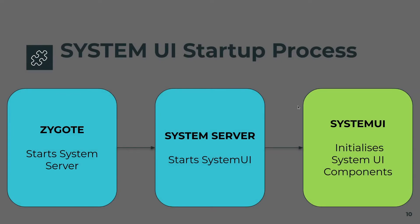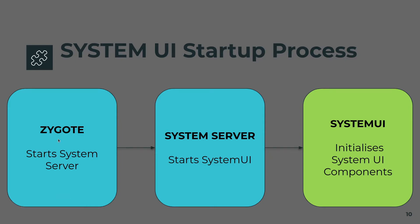Here is a high-level overview of how System UI is started. The Zygote process starts the System Server, the System Server in turn starts System UI, and System UI finally initializes all the System UI components. If you haven't heard about Zygote, it's one of the processes which starts during the Android boot process — one of the first Android processes to get started, and all other processes are started from Zygote.